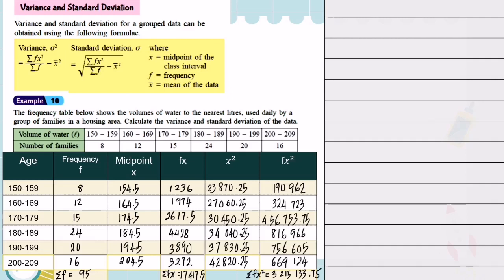Now we find the mean. The formula for mean is sigma fx over the total frequency. So sigma fx is 17,417.5 divided by the total frequency, which equals 184.34 liters.